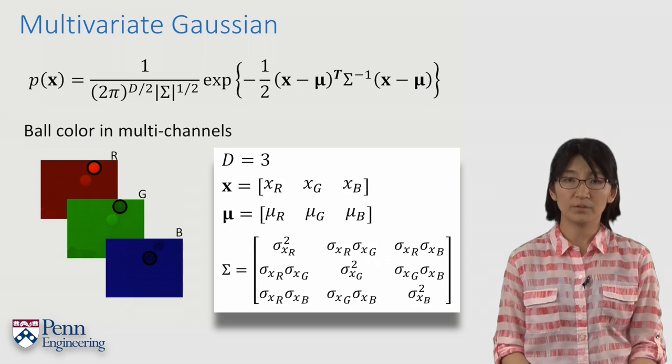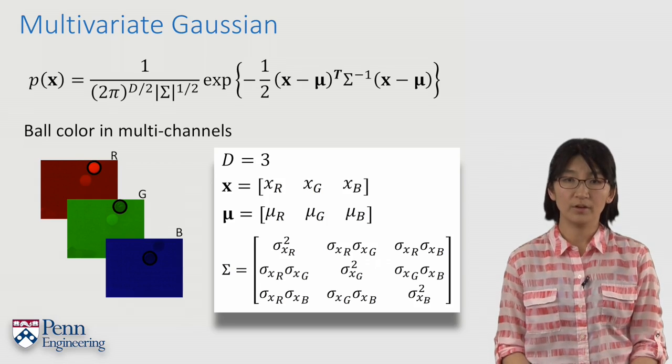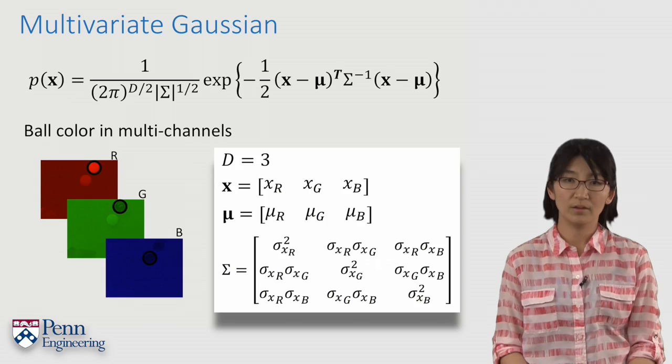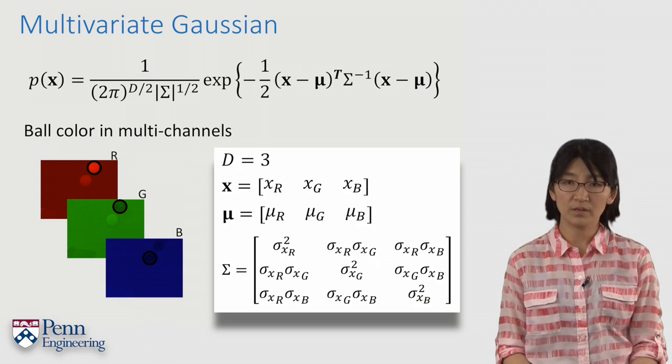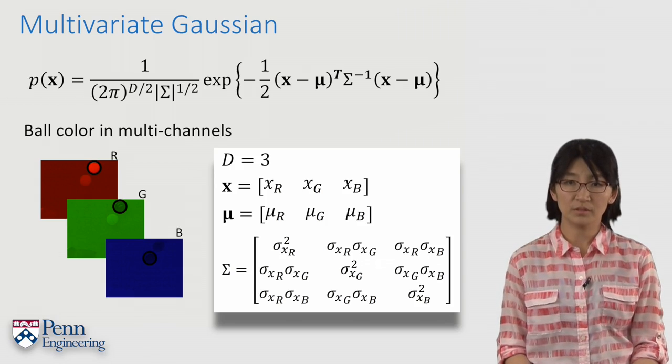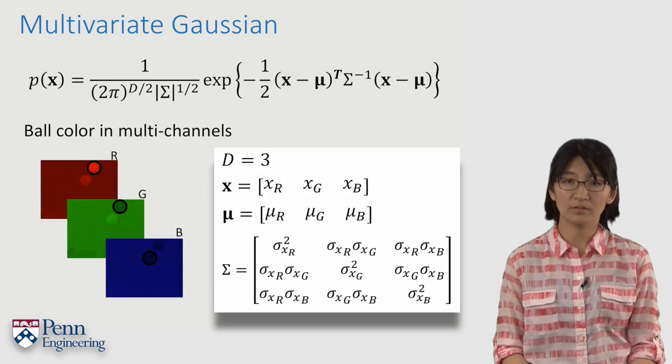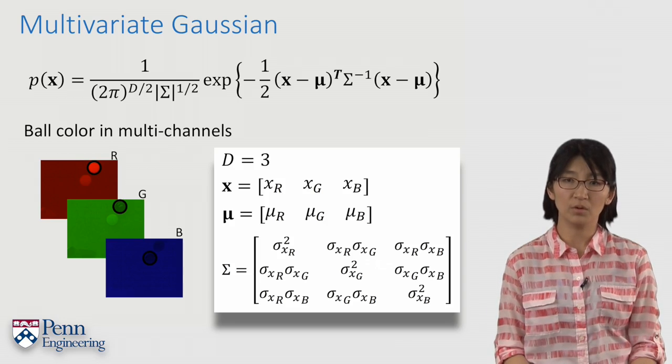The mean will be a 3 by 1 vector, and the covariance matrix will be a 3 by 3 matrix. P of x is the probability that this sampled pixel is generated from the ball, given that we know the mean and variance of the RGB model of the ball.